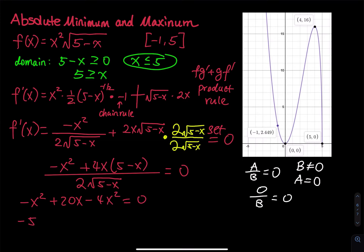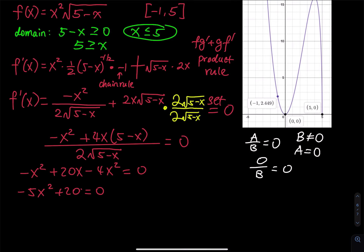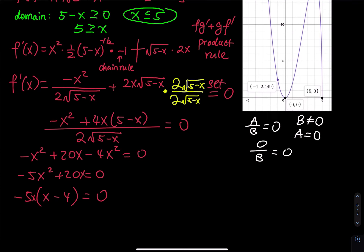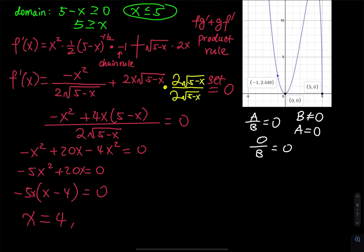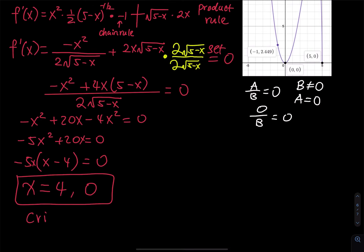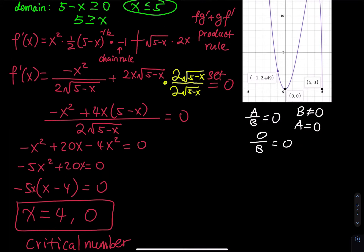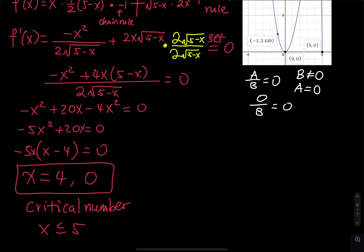We factor out negative 5x, giving us x times (x minus 4) equals 0. So there are two critical numbers: x equals 4 and x equals 0. Both critical numbers are inside the domain, since the domain is x less than or equal to 5.